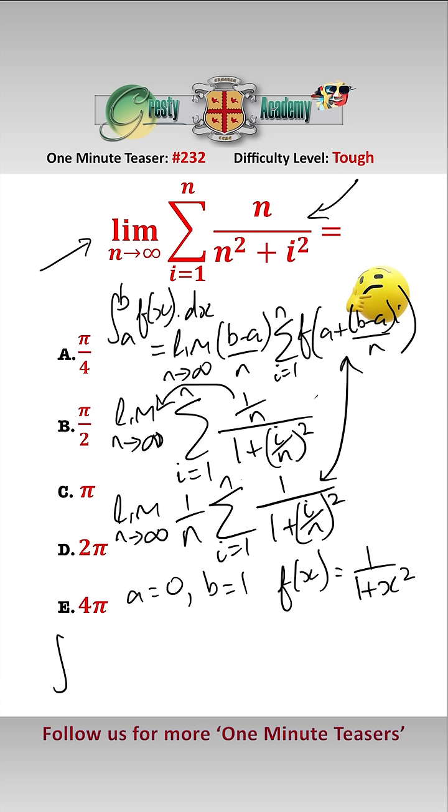That equals arctan(x) evaluated from 0 to 1, which equals π/4 minus 0, which is π/4. That's answer A.